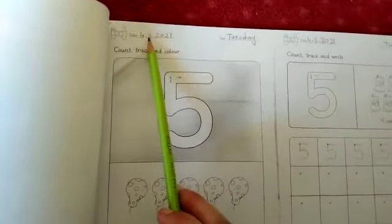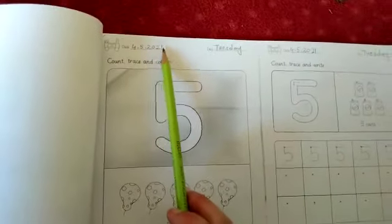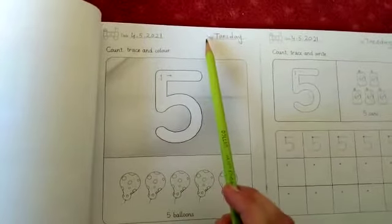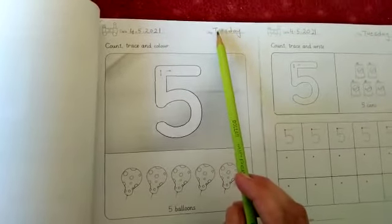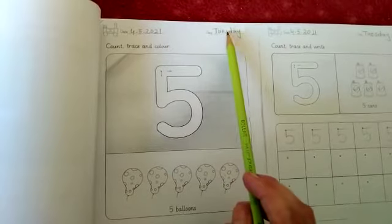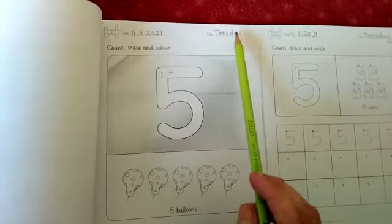First of all right date. Today date is 4th of May 2021 and day is D-A-Y, day is Tuesday, T-U-E-S-D-A-Y, Tuesday.